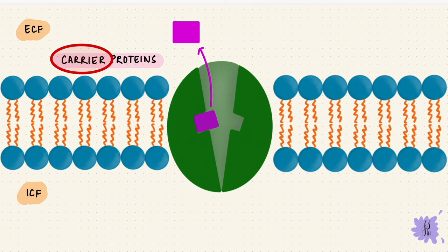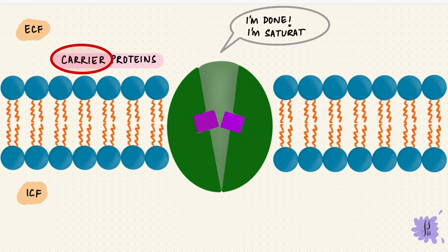This kind of carrier-mediated transport can get saturated, which means after a while, as the concentration increases, all the binding sites fill up. So it can't transport anymore. The rate of transport has reached its maximum, and this is called the transport maximum. This kind of saturation wouldn't happen with simple diffusion because there's no carrier.